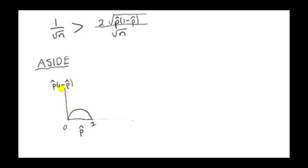So we graph it. We draw the graph of this thing. This is just a quadratic - it's P hat minus P hat squared. So it's just a graph of a quadratic function. It's quite straightforward to work out.